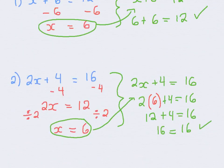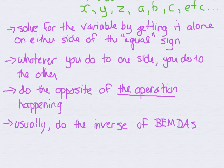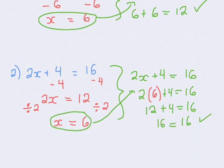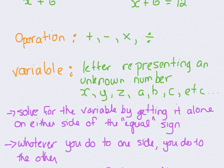And those are some examples for solving equations. I just want you to remember these four points from the beginning of this lesson. You need to solve for the variable by getting it alone on either side of the equal sign. Whatever you do to one side, you have to do to the other side. You also need to do the opposite of the operation that's happening — so if something is being added to my x, I'm going to subtract it. And another helpful tip is to do the inverse of our order of operations, BEMDAS — so we did addition and subtraction before multiplication in all of these examples. And that is it for solving equations.